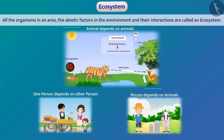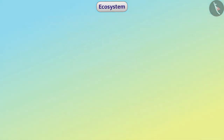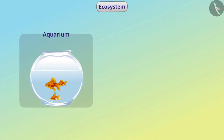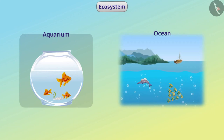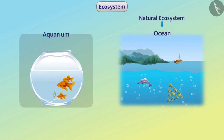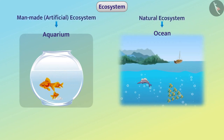For example, forests and villages are ecosystems. Ecosystems can be very small like a small aquarium, and they can be very big like an ocean. Ecosystems can be natural or can be man-made, that is, artificial.